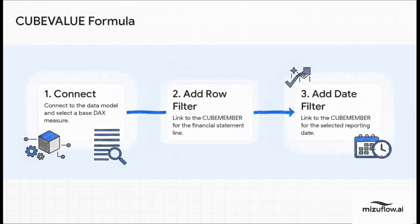Building one of these CUBEVALUE formulas is actually really straightforward. First, you tell it what data model to connect to and which measure you want to grab, like your total trial balance measure. Then you start adding the coordinates — you point it to the cell that has your row label, that's your CUBEMEMBER for the account, and then you point it to the cell with your date label. The formula does the rest, reaching into the model and pulling back the perfectly filtered number.